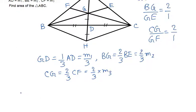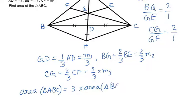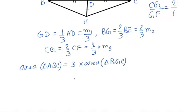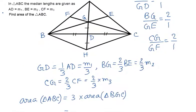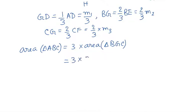From the median concept, the area of triangle ABC equals 3 times the area of triangle BGC. Since BGCH is a parallelogram, triangle BGC and triangle BGH share the same base and have equal area. Therefore, the area of triangle ABC equals 3 times the area of triangle BGH.